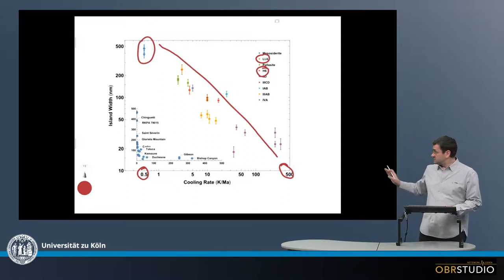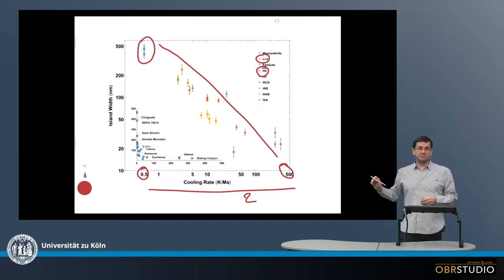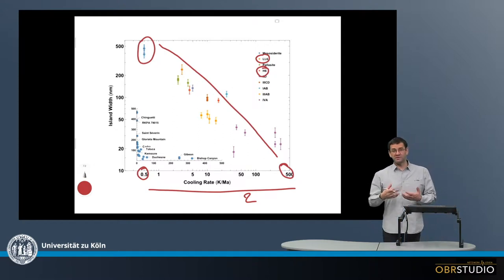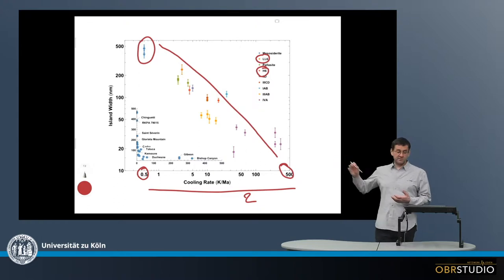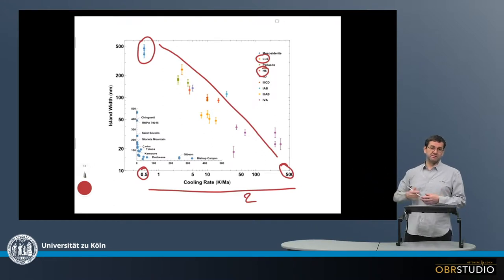And the cooling rate in total spans a range of about two orders of magnitude. So that's quite large. So from about 0.5 Kelvin per million of years, so this is very slow cooling, up to something like 500 Kelvin per million of years. So in this case, it may take a million, two or three million years to cool down. In this case, it might take a couple of tens or maybe even hundreds of millions of years to cool down.